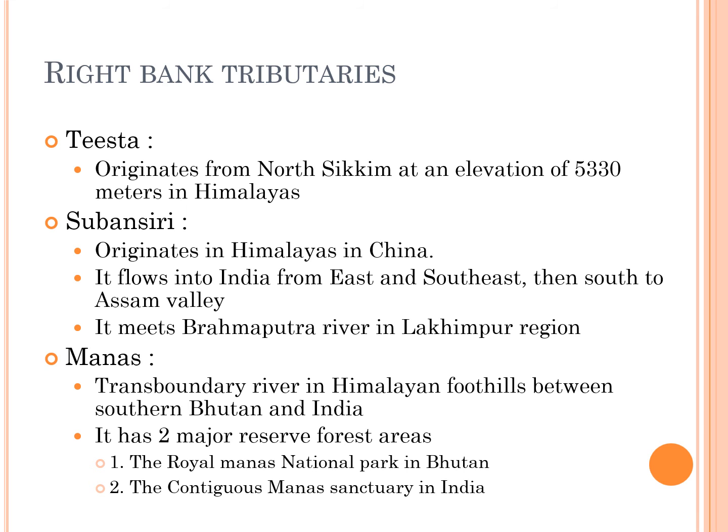The second right tributary is Subansri. The Subansri river originates in the Himalayas in China. It flows into India from east and southeast, then south to the Assam valley, where it meets the Brahmaputra river in the Lakhimpur region.